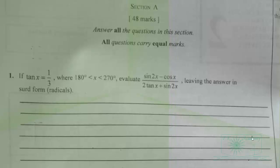This is May June 2024 elective mathematics paper 2. Here we have the first question: if tan x is equal to 1 over 3, where x is between 180 degrees and 270 degrees, that is in the third quadrant, we are to evaluate sine 2x minus cos x over 2 tan x plus sine 2x, leaving the answer in surd form or in radicals.